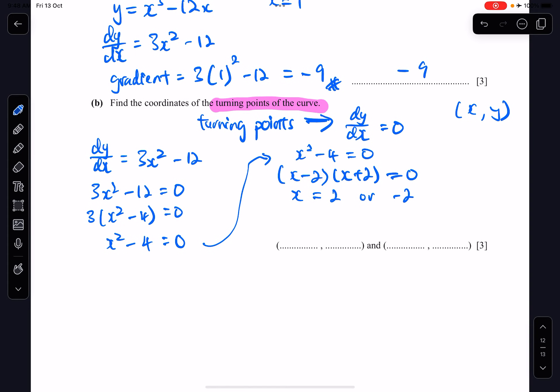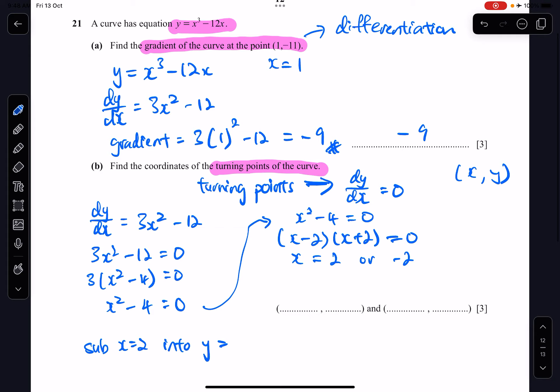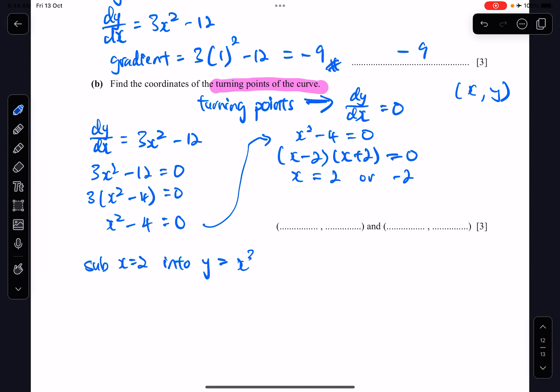Now I will have to substitute x equals to 2 into y equals to x cubed minus 12x. So my y value will be 2 cubed minus 12 times 2. So will be 8 minus 24. It should be negative 16. So the first point, therefore, will be 2 comma negative 16.